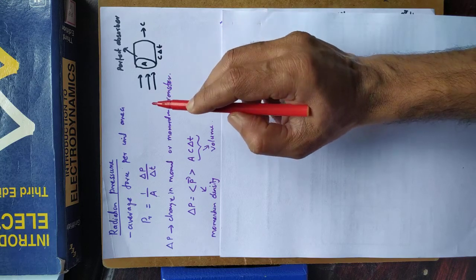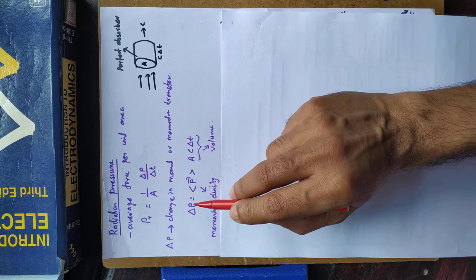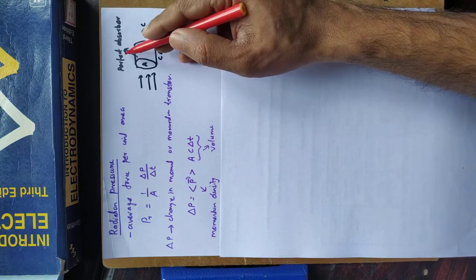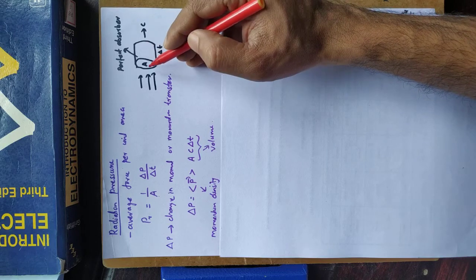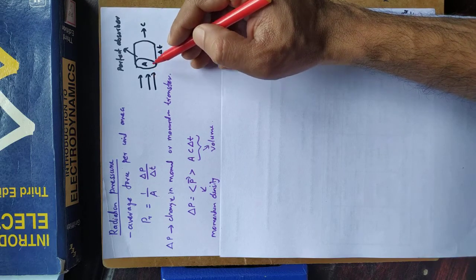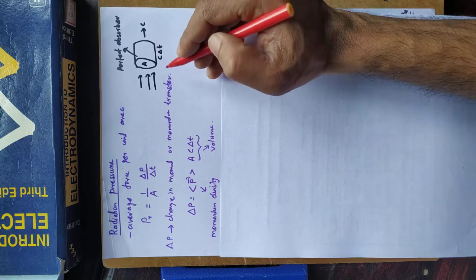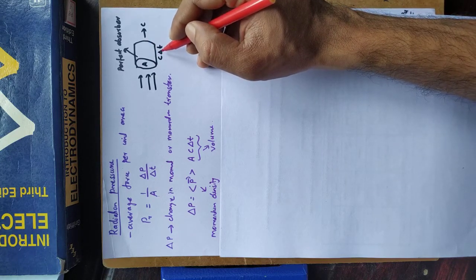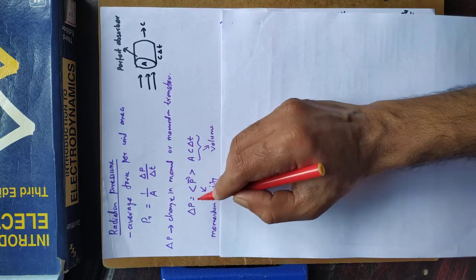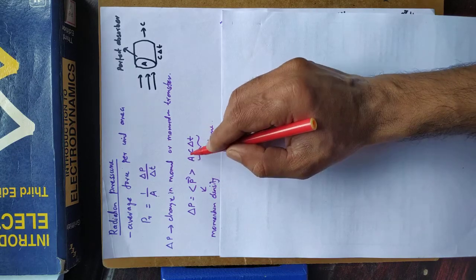Momentum transfer by the electromagnetic wave to the material. Consider an electromagnetic wave falls on a perfect absorber of area A, and it delivers momentum to the surface. In a time delta T, the momentum transfer is given by delta P equal to momentum density times volume.